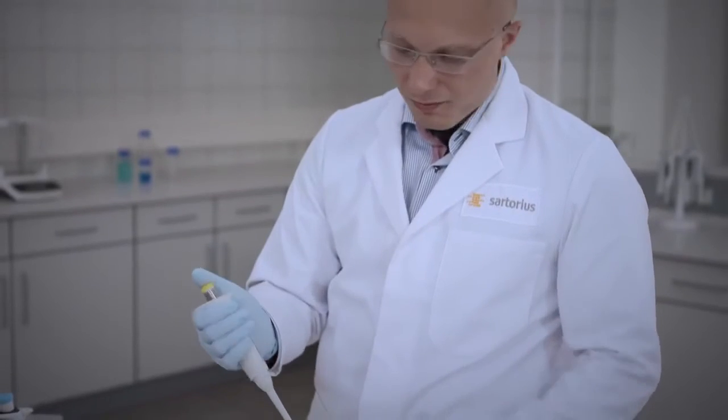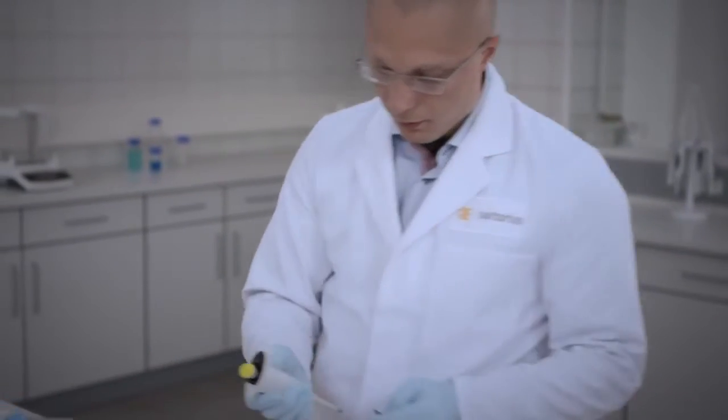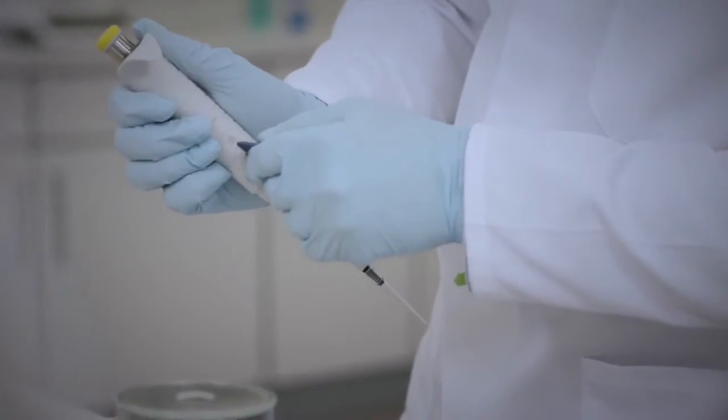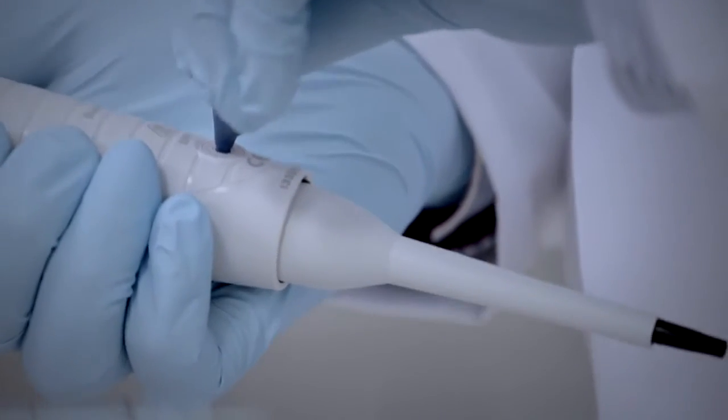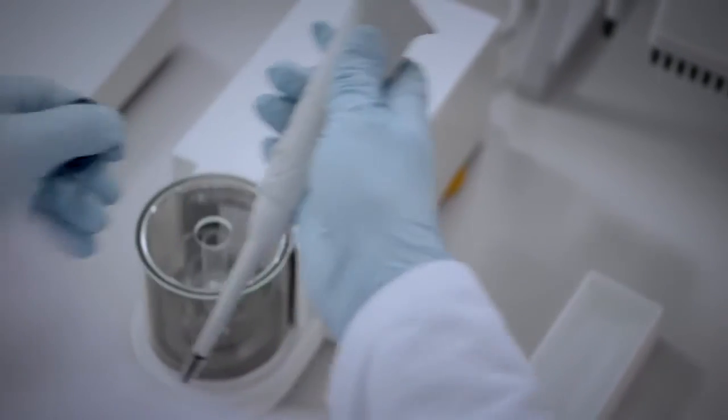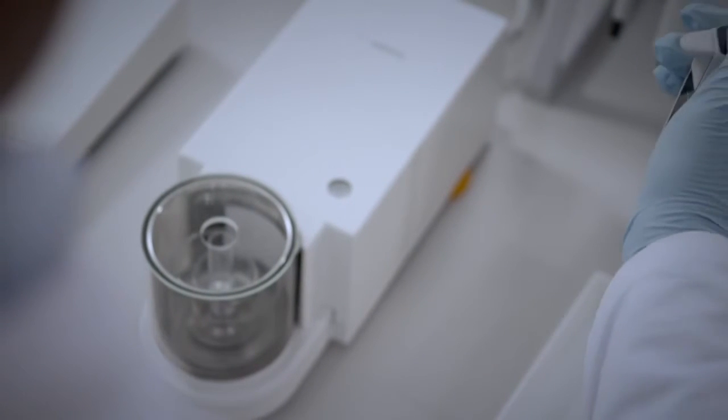Pipettes can often be adjusted to correct for accuracy using special calibration tools. A turn clockwise will increase the dispensed volume while a turn counterclockwise decreases the volume.